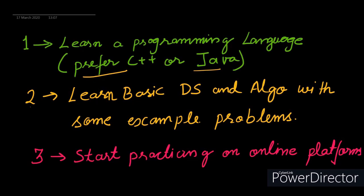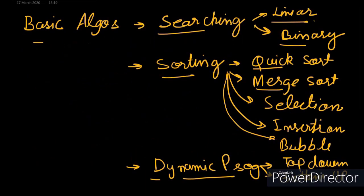The next step is to learn data structures and algorithms with some examples of each. You should be comfortable with linear search and binary search algorithms. Then there are sorting algorithms such as quicksort, merge sort, selection sort, insertion sort, and bubble sort. Quicksort and merge sort are O(n log n) complexity, while the other sorting algorithms are O(n²).